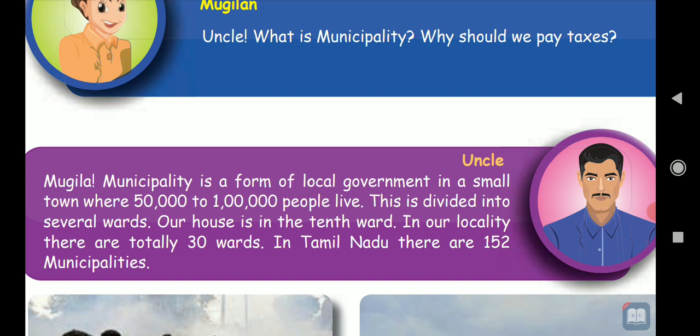Have you understood? The municipality areas are 152 — in Tamil Nadu, 152 municipality areas are there. In these 152 areas, there is a population of 50,000 to 1 lakh only. That is the municipality area.